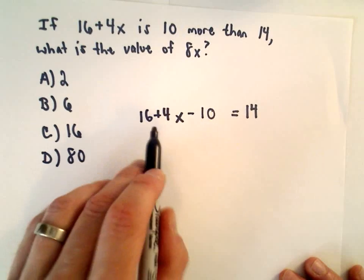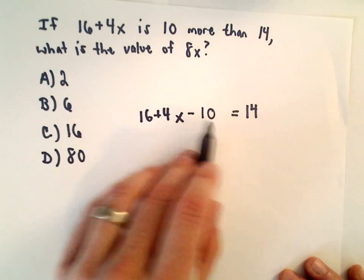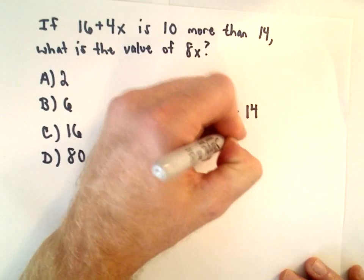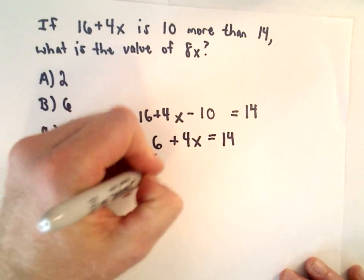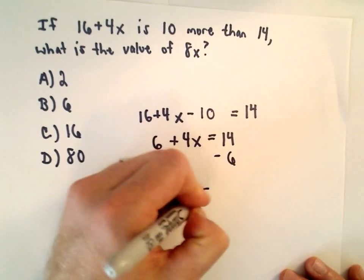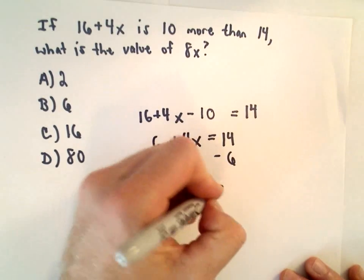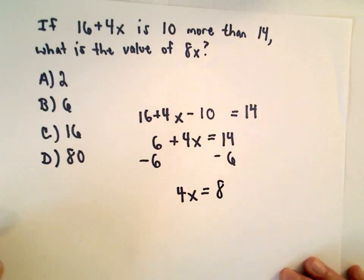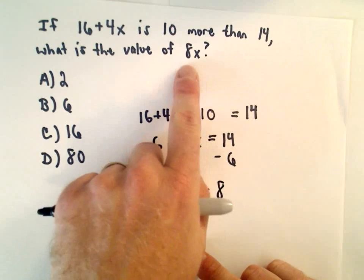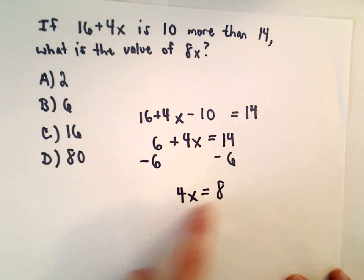And now we just have a nice simple equation. So 16 minus 10, that's going to leave us with 6 plus 4x equals 14. We could subtract 6 from both sides, so we'll have 4x equals 14 minus 6, which is going to be 8. I said I was going to solve for x, but I'm not going to do that actually because—I mean you could solve for x, you could divide both sides by 4 and then get the value of x.